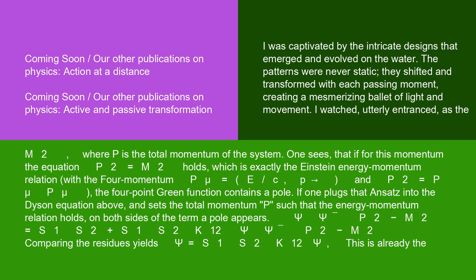If one plugs that ansatz into the Dyson equation above and sets the total momentum P such that the energy-momentum relation holds, on both sides of the term a pole appears: ψψ/(P² - M²) equals S₁S₂ plus S₁S₂K₁₂ ψψ/(P² - M²).